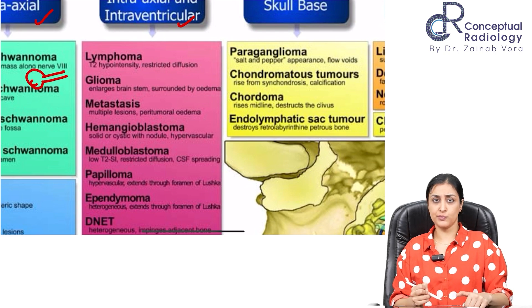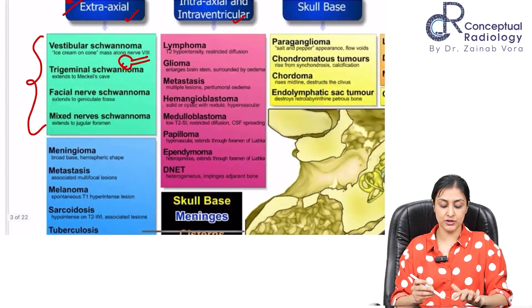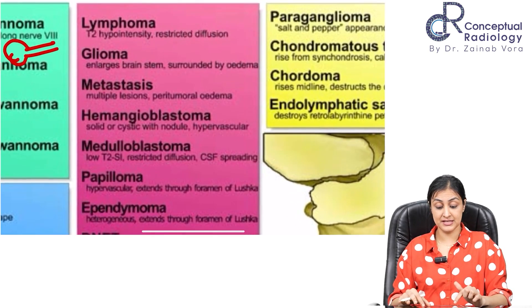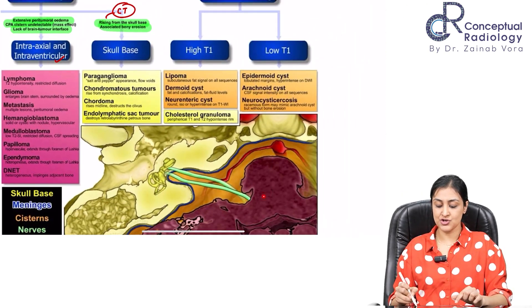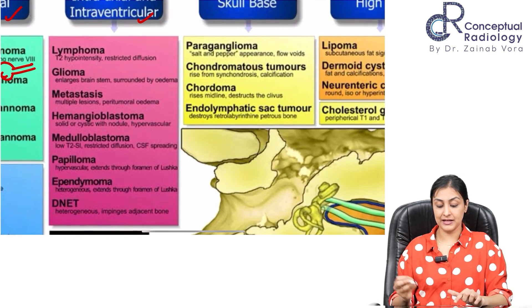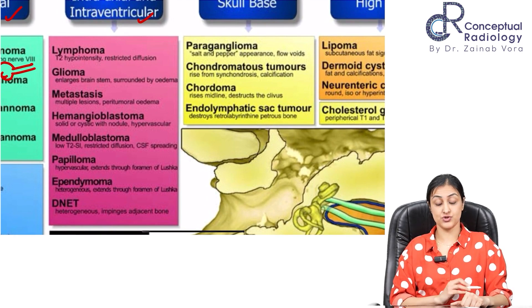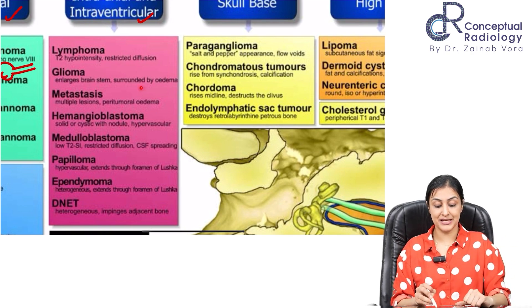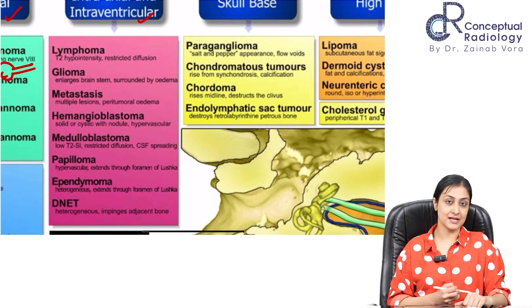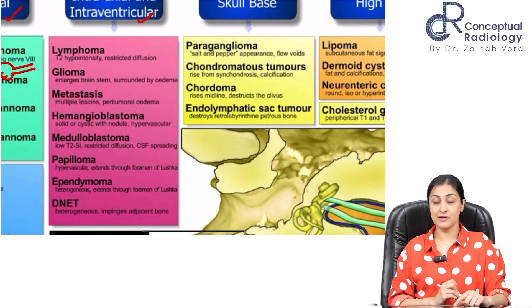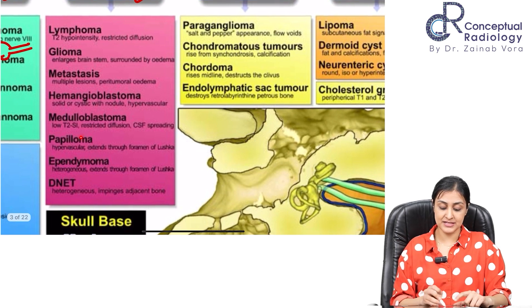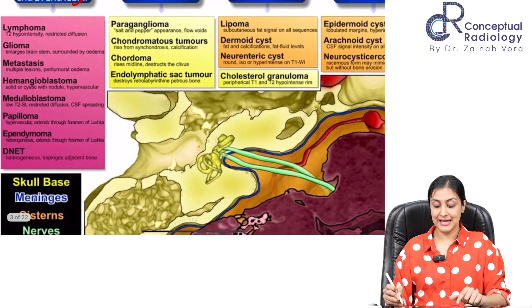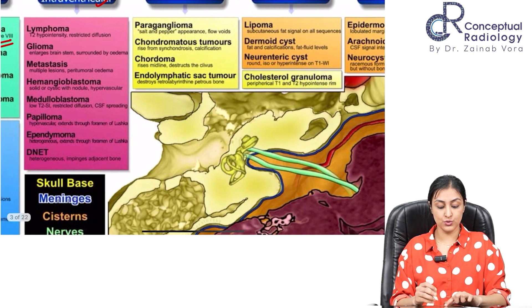For intra-axial and intraventricular lesions impinging on the CP angle: lymphoma is hypercellular, showing T2 hypointensity and diffusion restriction. Glioma will be epicentered in the brainstem with brainstem expansion and edema. Metastasis typically presents as multiple lesions. Hemangioblastoma is a solid-cystic nodule with high vascularity. Medulloblastoma is epicentered in the brainstem with restricted diffusion and drop metastases.